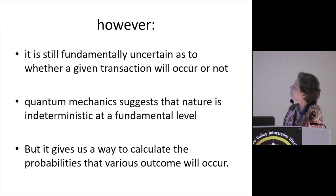Just some other considerations here. It's still fundamentally uncertain as to whether a given transaction will occur or not. And so quantum mechanics does suggest that nature is indeterministic at a fundamental level, but it does give us a way to calculate the probabilities of various outcomes will occur. And of course, in the transactional picture, you get a reason for, you get a description of measurement as a physical process and you get an end to these kinds of macroscopic superpositions that characterize the measurement problem. So you still have the fundamental indeterminacy, but that now becomes something that doesn't propagate into superpositions. It's simply an uncertainty as to which of your transactions will actualize.